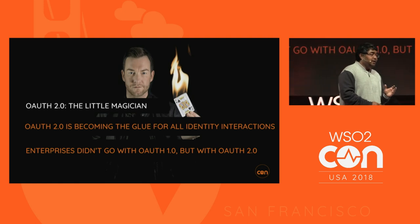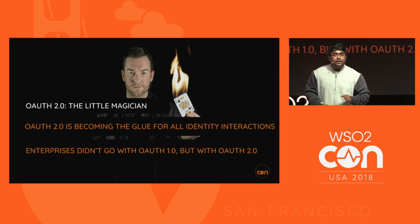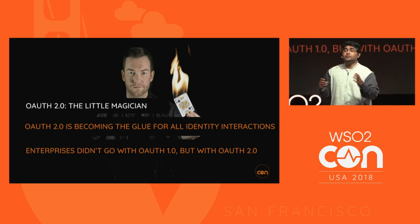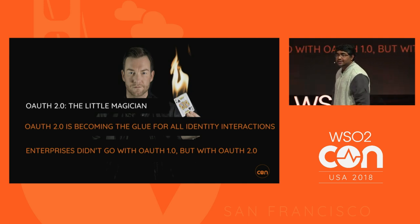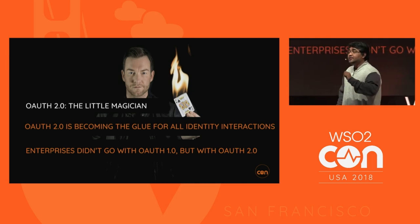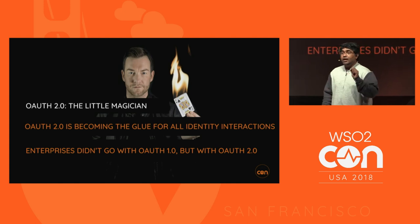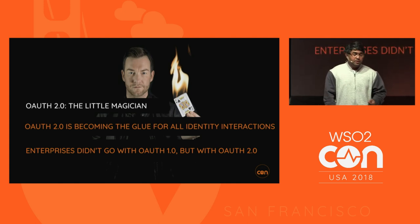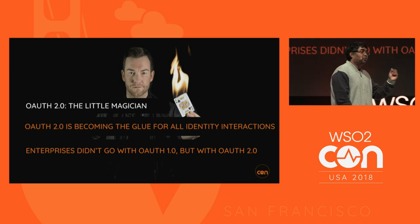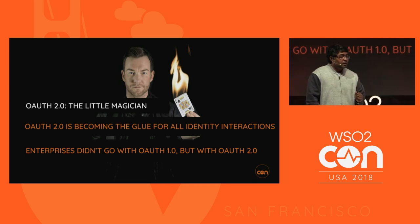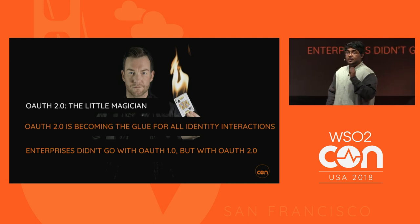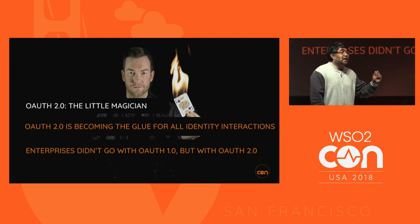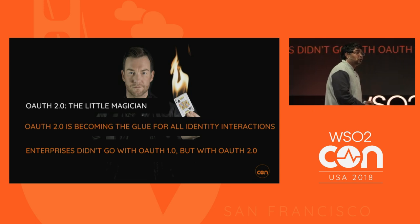It's rather unlikely to have one identity standard dominate all spaces in the IAM domain, but OAuth 2.0 is getting there. If I write an application today — whether a web app, single page app, IoT app, microservice, or API — I'm going to bet on OAuth 2.0. It is becoming the glue for all identity interactions. The beauty of OAuth 2.0 is its extensibility — that's why enterprises chose OAuth 2.0 over OAuth 1.0.